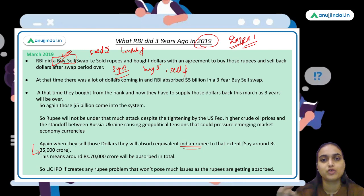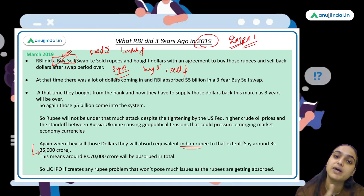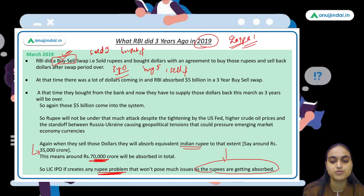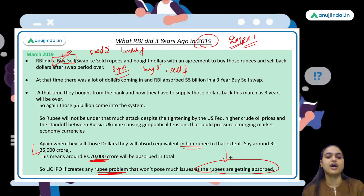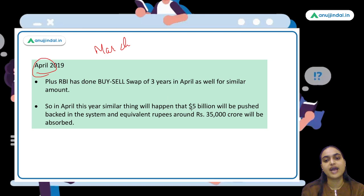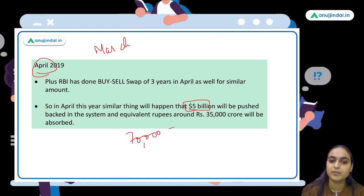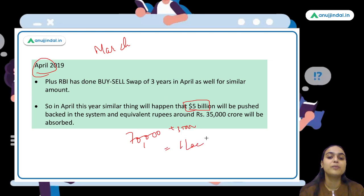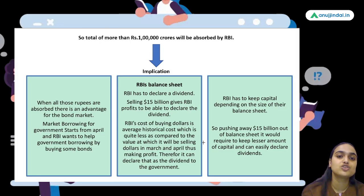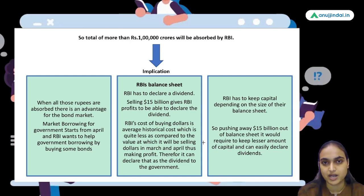With the previous swaps also coming into account — both the March and April 2019 swaps, each worth 5 billion dollars — a total of around 70,000 crores' worth of rupee liquidity is going to get absorbed. Adding the new swap, over 1 lakh crores of rupee liquidity will be absorbed by RBI. So even if the LIC IPO creates some pressure on the rupee, it won't be a big issue because rupees are already being absorbed.